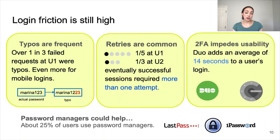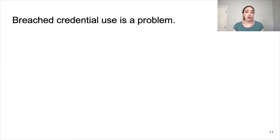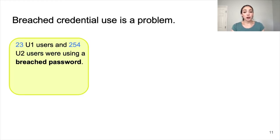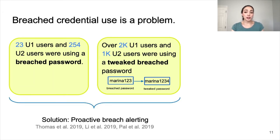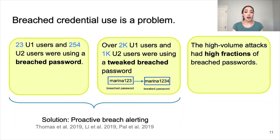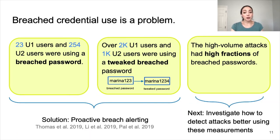Password managers could help with the first two issues. By looking at the number of users with at least 10 successful logins and no failures, we estimate that about 25% of users are already using password managers. We also looked at the use of breach credentials and found that it is a big problem. We saw 23 users at University 1 and 254 at University 2 still using a breached password. We also saw that over 2,000 users at University 1 and 1,000 at University 2 were using a close variant of a breached password, also known as a tweaked password. We believe the solution is proactive breach alerting when a user logs in or sets a new password. We also saw that the high-volume attacks had high fractions of breached passwords, and we plan to investigate how to detect password guessing attacks better using password-derived measurements.